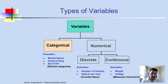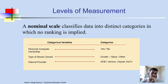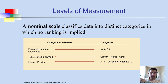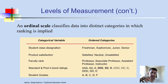Levels of measurement: The nominal scale classifies data into distinct categories in which no ranking is implied. For instance, personal computer ownership — do you have a computer, yes or no — is a nominal scale. We cannot say which one is bigger than the other because there is no ranking. Other examples include type of stocks owned (growth, value, other) and internet provider (AT&T, Verizon, CityNet, etc.).